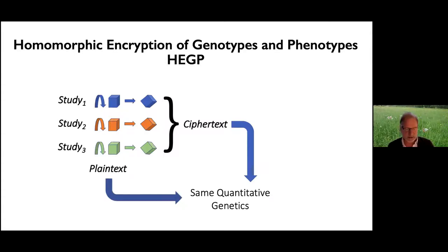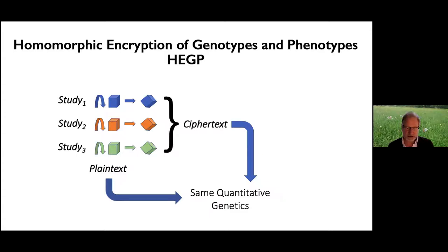HEGP provides a way for collaborators to first encrypt their own data and then share these ciphertexts so that what is sometimes called a federated genetic mega-analysis can be performed. In this diagram I've represented an analysis of three studies. Each cube represents the data from a study, and the process of encryption is shown as a rotation of the cube to generate a ciphertext. Genetic analysis of plaintexts — the unencrypted versions of each study — will yield the same answers as a combined analysis of the ciphertexts. Genetic analysis includes performing genetic association using linear mixed models and estimating heritability, for example.